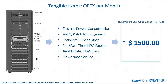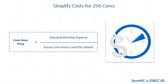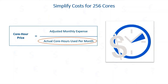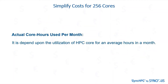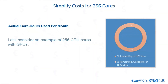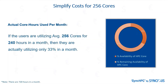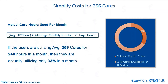These are the OPEX aspects of an on-premise system, which may cost you around $1,500 per month. You should calculate the core per hour price of your system with this equation. The adjusted monthly expense includes monthly adjusted CAPEX and monthly OPEX of the system. You can also find your average use hours of the system, known as actual core hours used per month. Consider a 256 CPU plus GPU system with 100% availability, but users are only utilizing 256 cores for 240 hours in a month — that is one third of the total monthly hours — and we can find it using this simple equation.